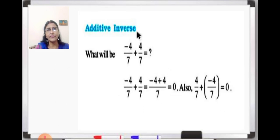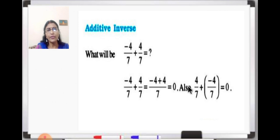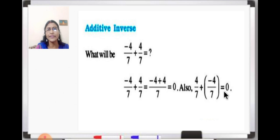Now next is additive inverse. What is minus 4 upon 7 plus 4 upon 7? The denominator 7 is the same, so we write 7 in the denominator and compute minus 4 plus 4 which equals 0. Whenever you add any rational number with its additive inverse, you will always get 0. The additive inverse of 4 upon 7 is minus 4 upon 7, and the additive inverse of minus 4 upon 7 is 4 upon 7.